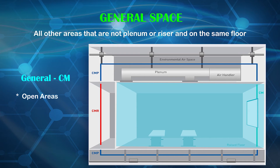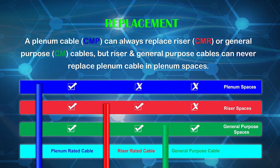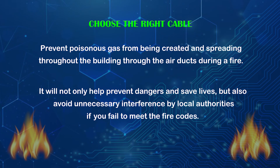A plenum cable (CMP) can always replace riser (CMR) or general purpose (CM) cables, but riser and general purpose cables can never replace plenum cable in plenum spaces. Choosing the right cable will prevent poisonous gas from being created and spreading throughout the building through the air ducts during a fire.